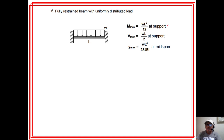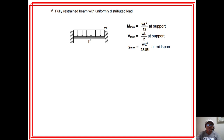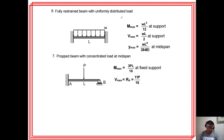For the fully restrained beam with UDL, once you know the maximum moment at the support (WL²/12), the shear is easy: WL total divided by 2 supports equals WL/2. You can then solve for moment at mid-span by cutting and summing moments. We also have the prop cantilever beam — fixed at one end with a simple support on the other end — for both concentrated load and uniformly distributed load cases.